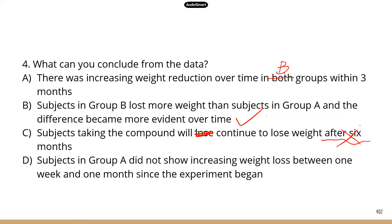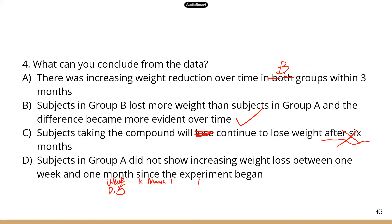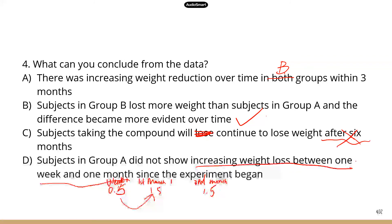Statement D says subjects in group A did not show increasing weight loss between one week and one month. That's not correct — the weight loss for group A actually increased from 0.5 kilograms at one week to 1.5 kilograms at one month. So it did increase. If the statement had said between one month and three months, that would be correct, because the number stayed the same. So D is not correct.